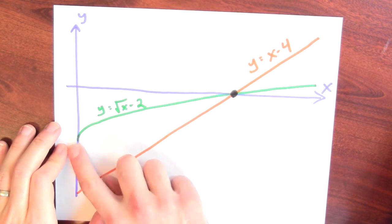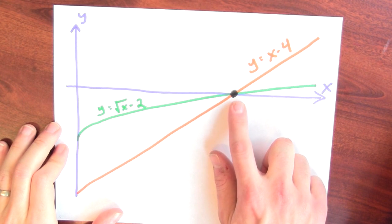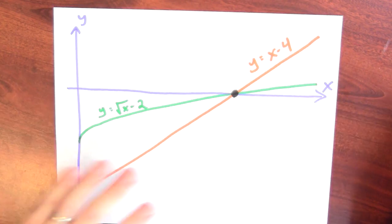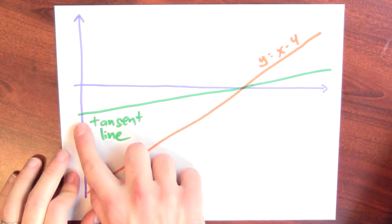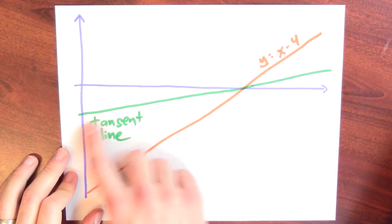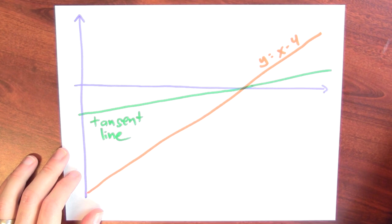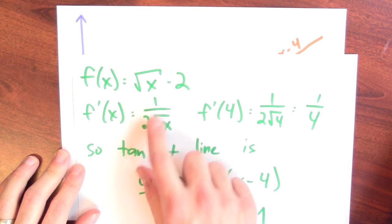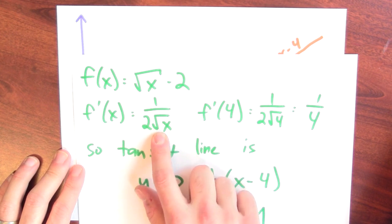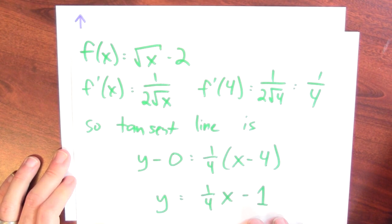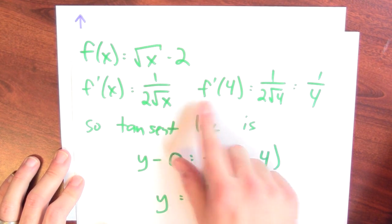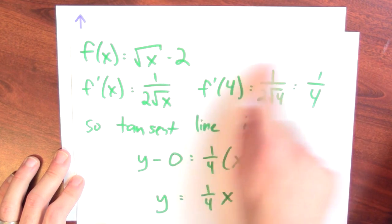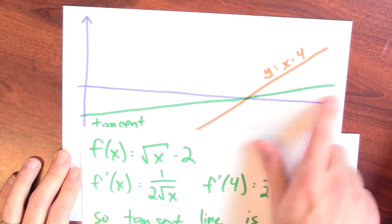Let's replace those two functions with the approximations that we get by using the derivative. Let me replace this green curve with the tangent line to the green curve at the point where it crosses the x-axis. I could compute that tangent line by doing a little bit of calculus. This function is the square root of x minus 2; if I differentiate that, I get 1 over 2 square roots of x. That's the derivative of the square root function, and the derivative of minus 2 is just 0. I can evaluate that derivative at 4 and get the derivative as 1/4 — that's the slope of the tangent line to the green curve.